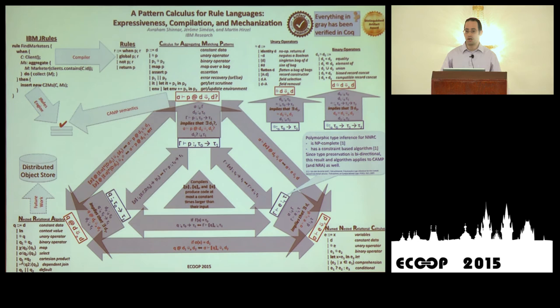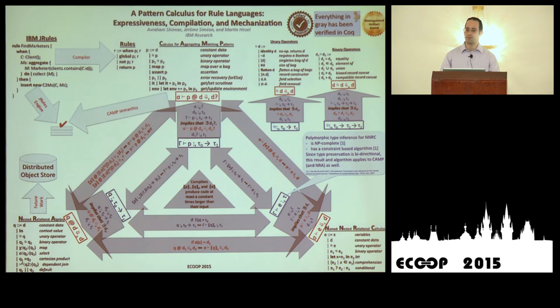To summarize: this was motivated by a real problem — a product team wanted to use JRules over data in a distributed in-memory system but didn't know how to run JRules in a globally distributed way. To solve this, we built a model that formally encodes the key semantics of JRules programs, showed how expressive it is, and demonstrated interesting properties along the way.